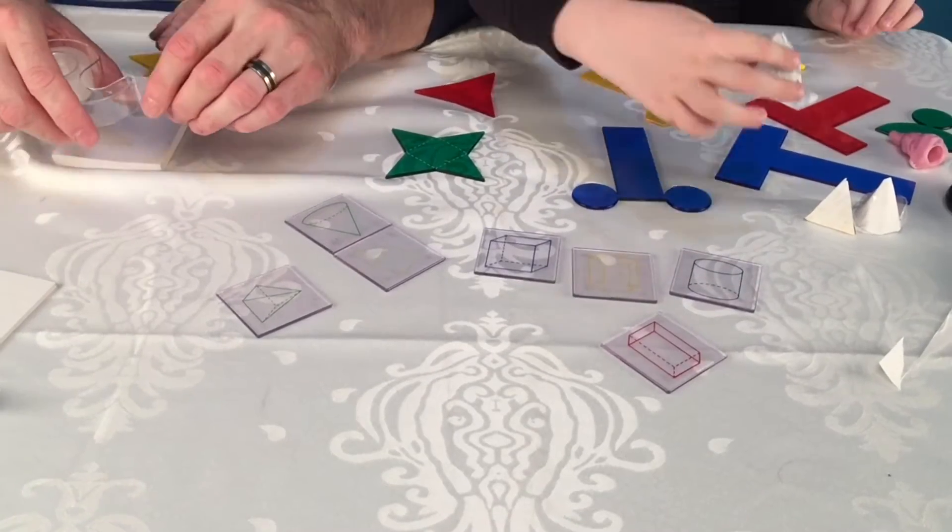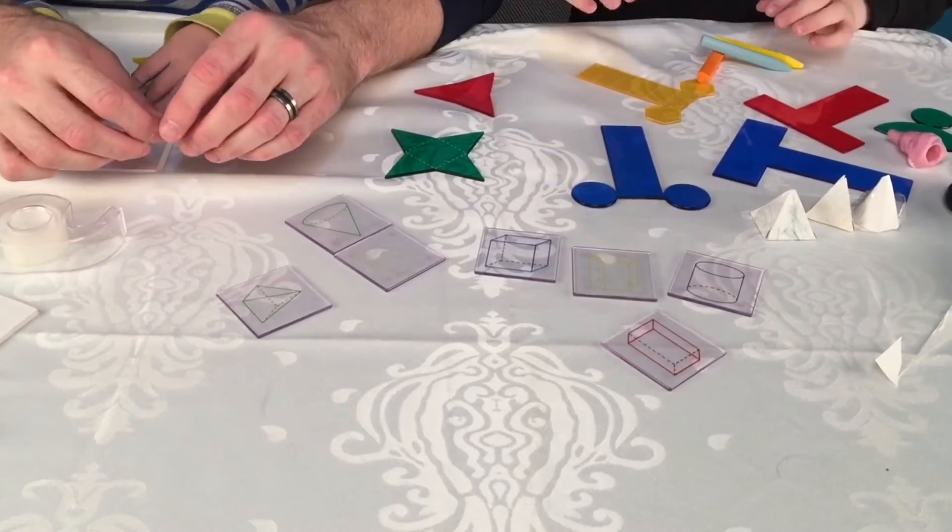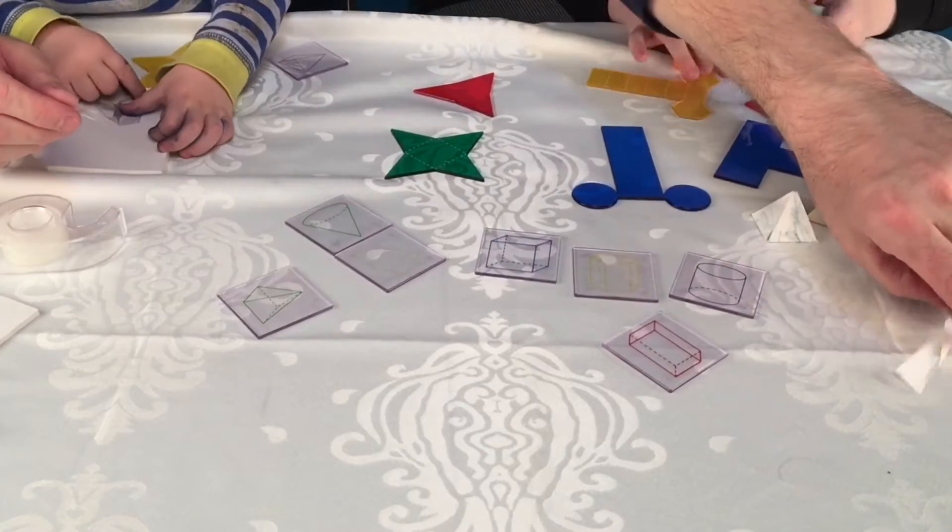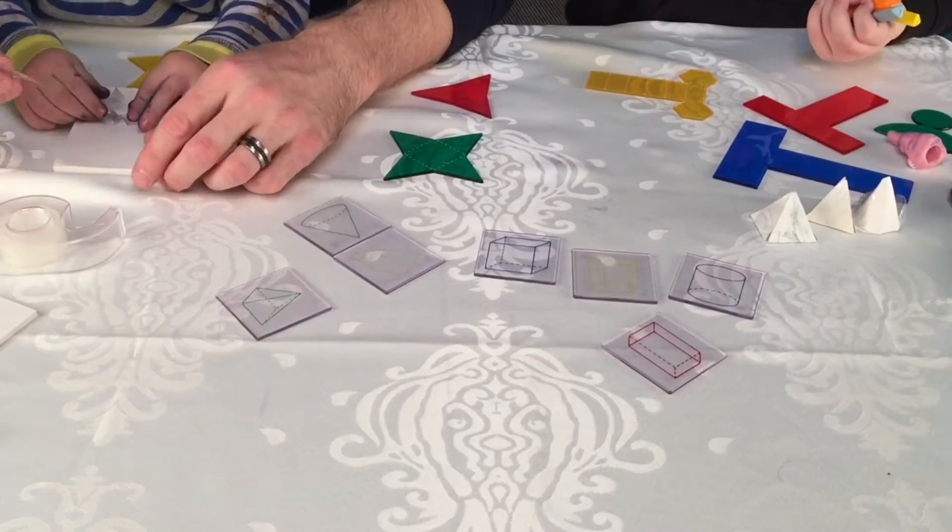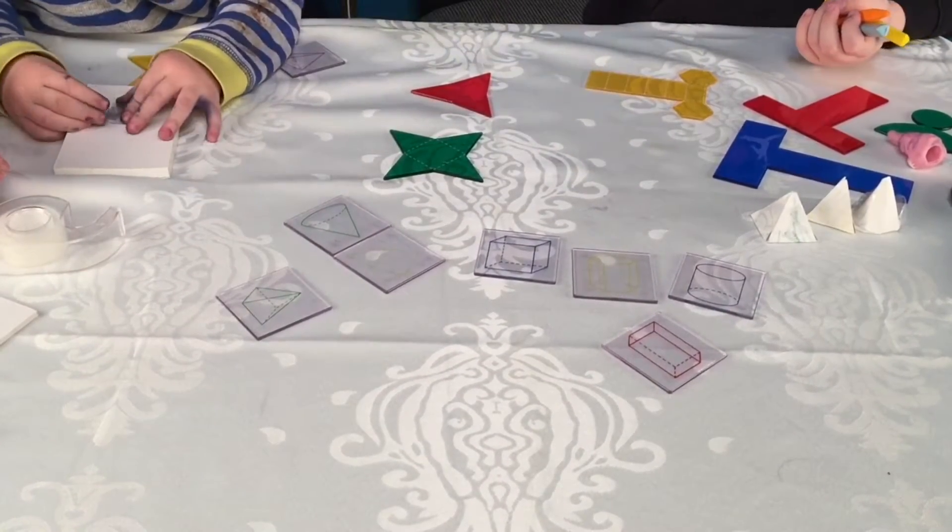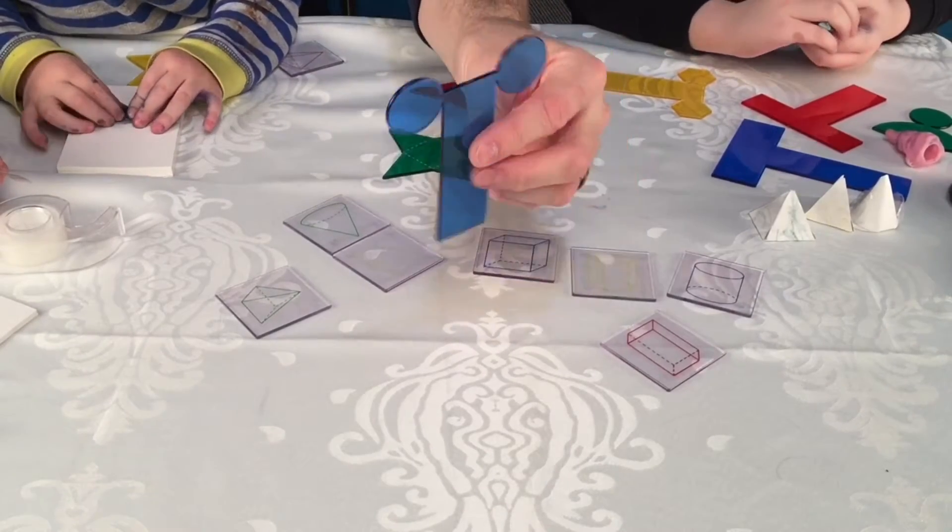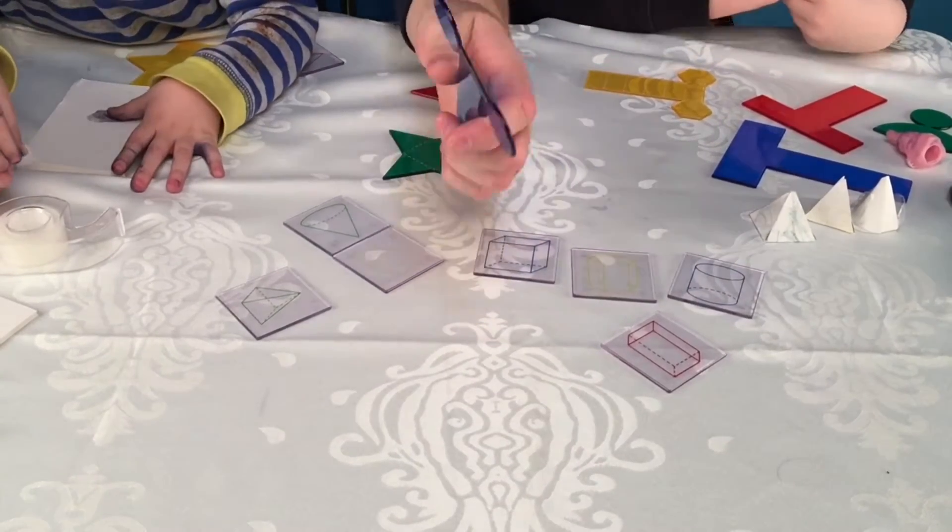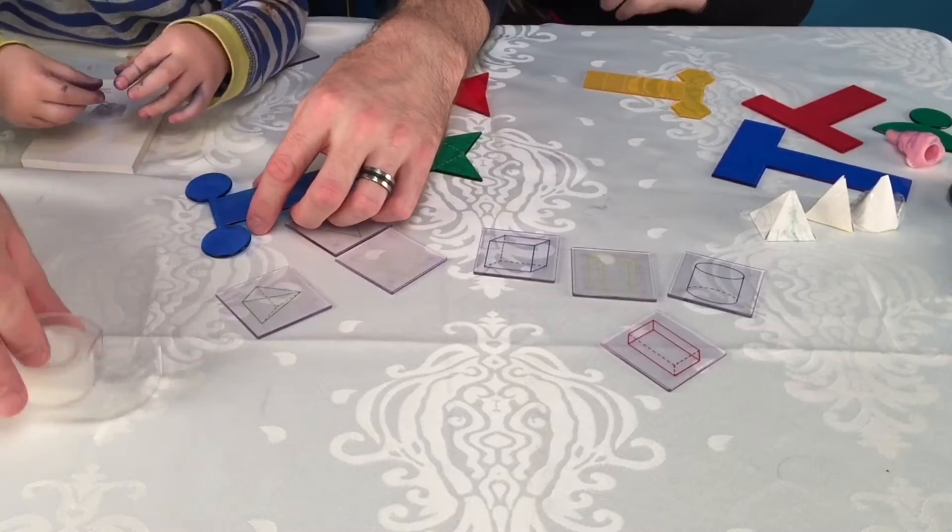So now we made this pyramid. Alright. Now next we're going to make the cylinder. Oh, you think that one's a cylinder? Yeah, since wandering on circle of places. Well, let's find out.